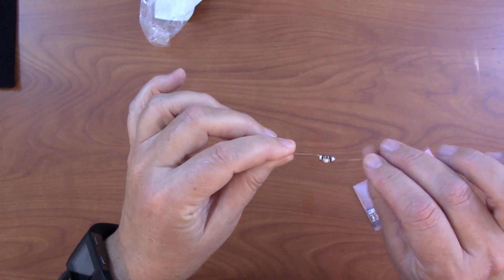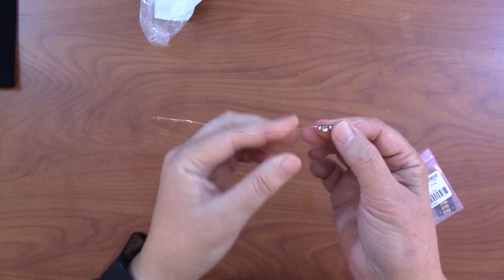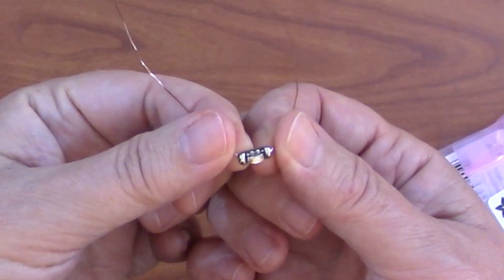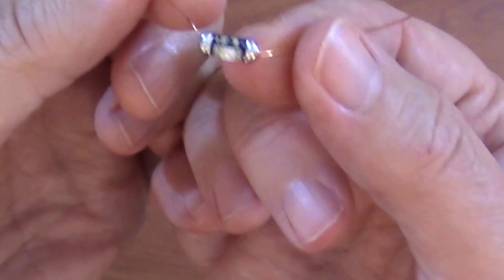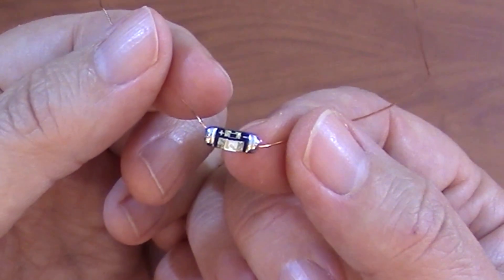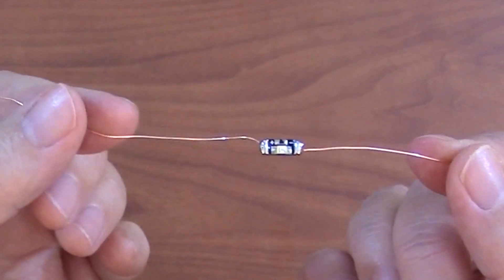So my first step was to prepare each of the sequins by putting copper wires through the holes and soldering them on. And I'm actually going to use the wire as the way the sequins are held onto the necklace.